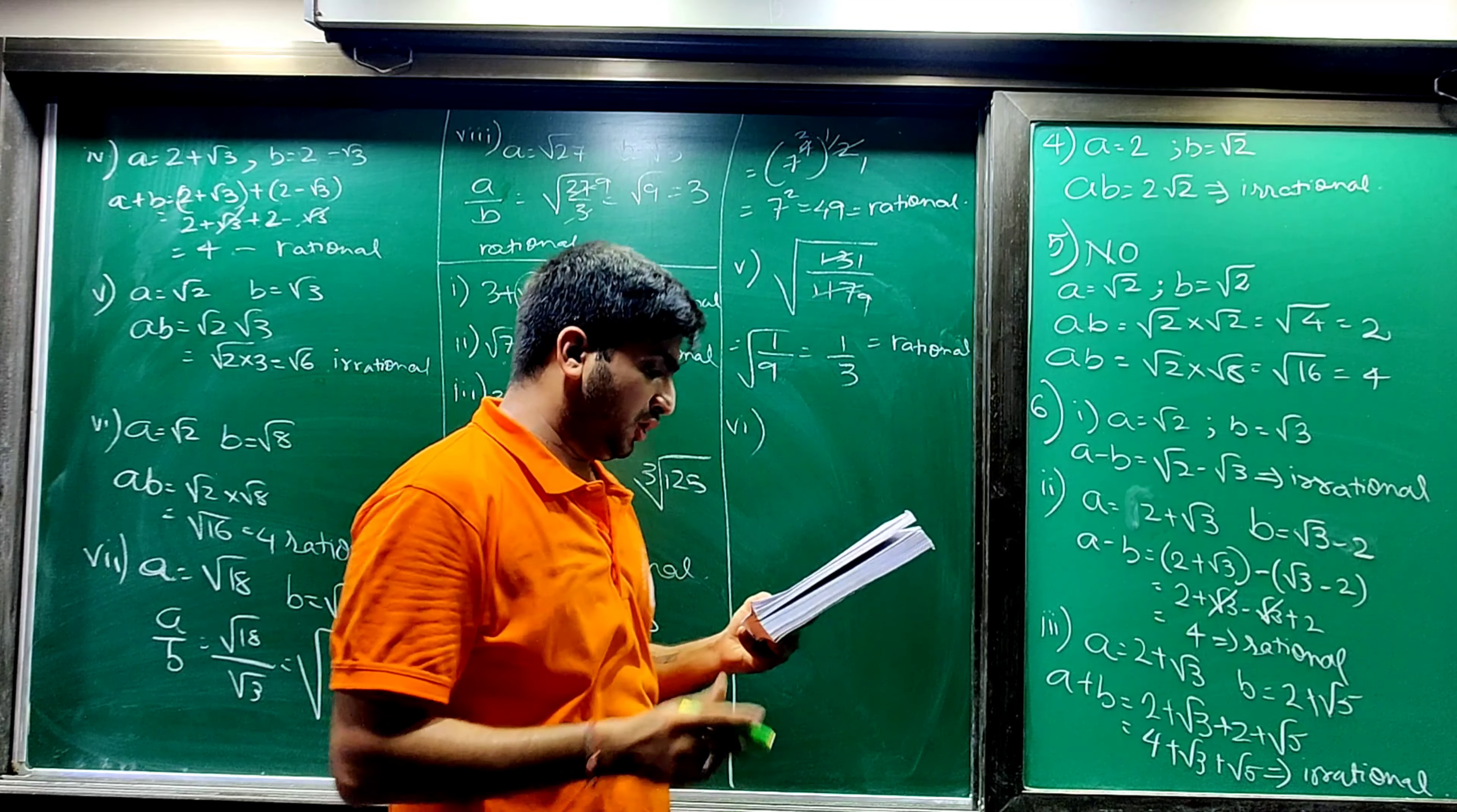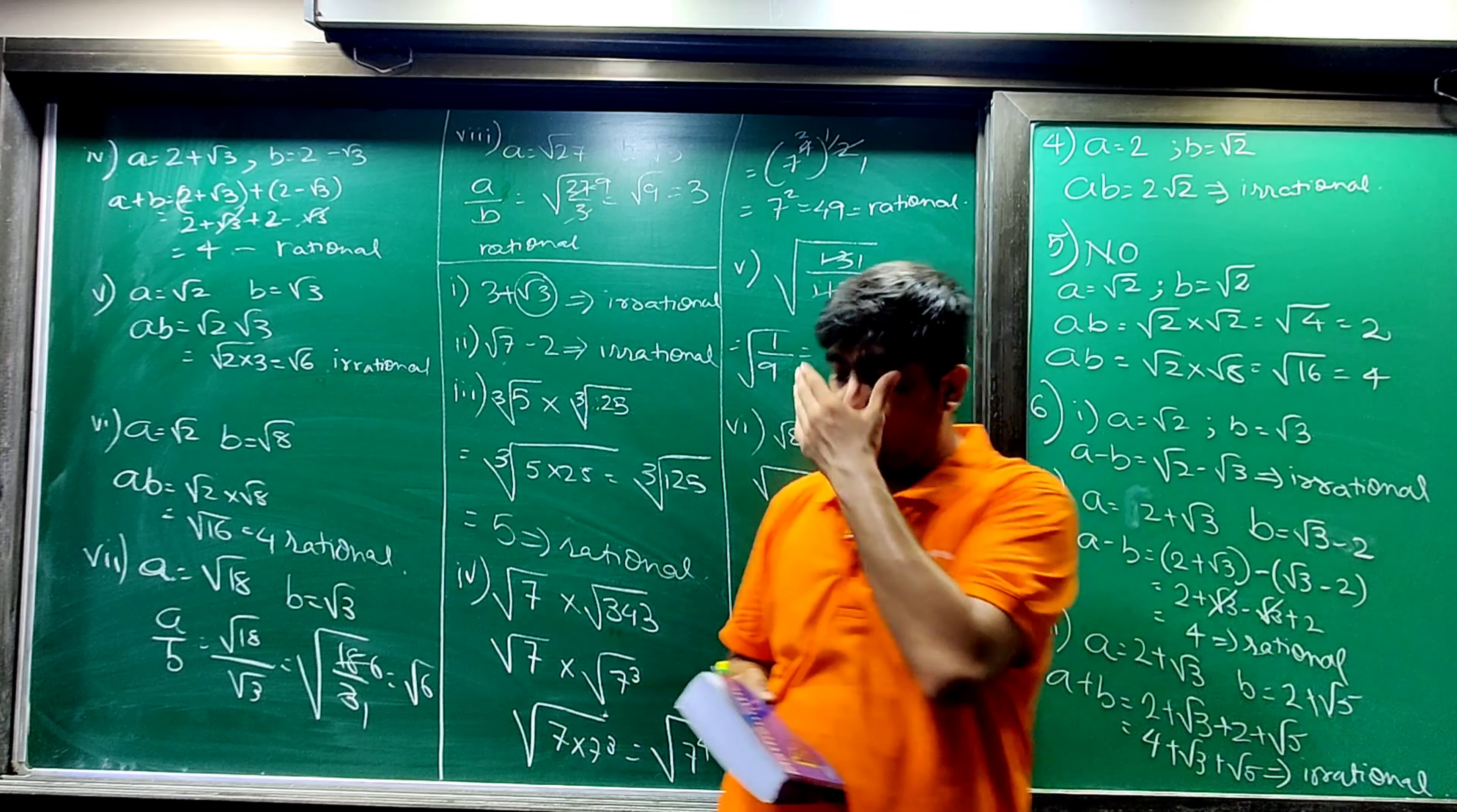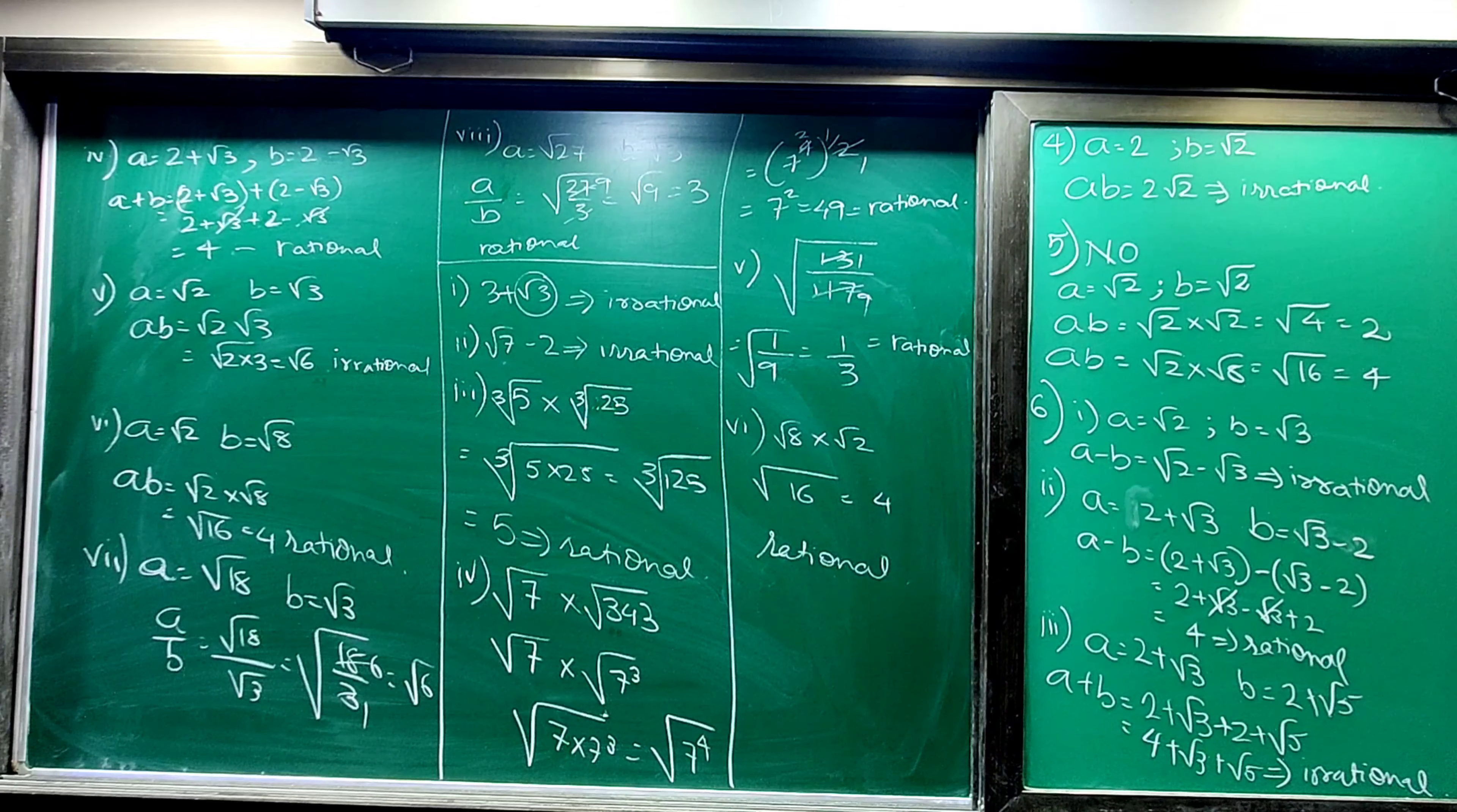And sixth, last: root 8 into root 2. Root 8 into root 2, I already gave example. This is root 16, which is 4. So this is also a rational number. So that's it for your exercise 1C today. Part 1 is over. If you have gone through this video, please do like, share, comment, and do not forget to subscribe my channel. It is Sanket Purohit. Thank you very much. I am signing off. Bye bye students, bye bye.